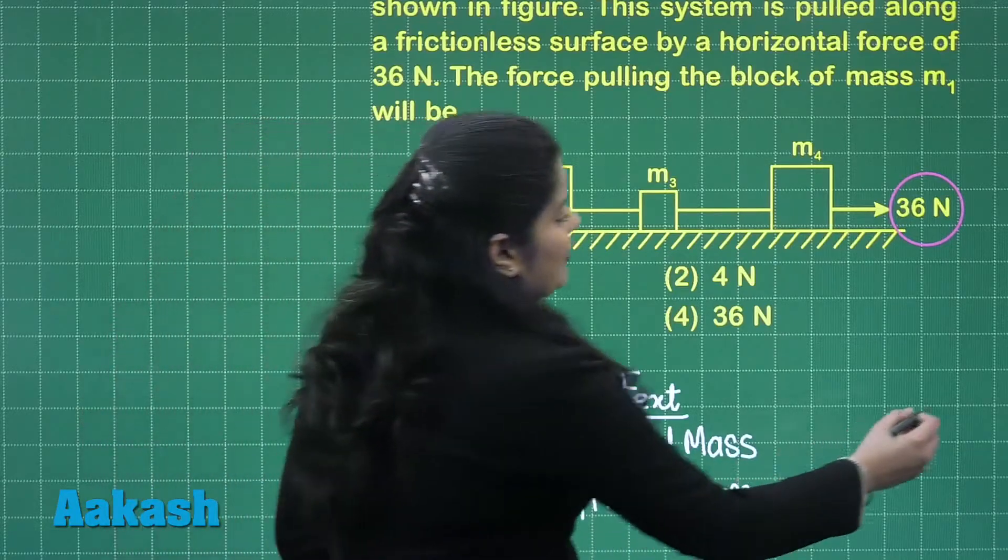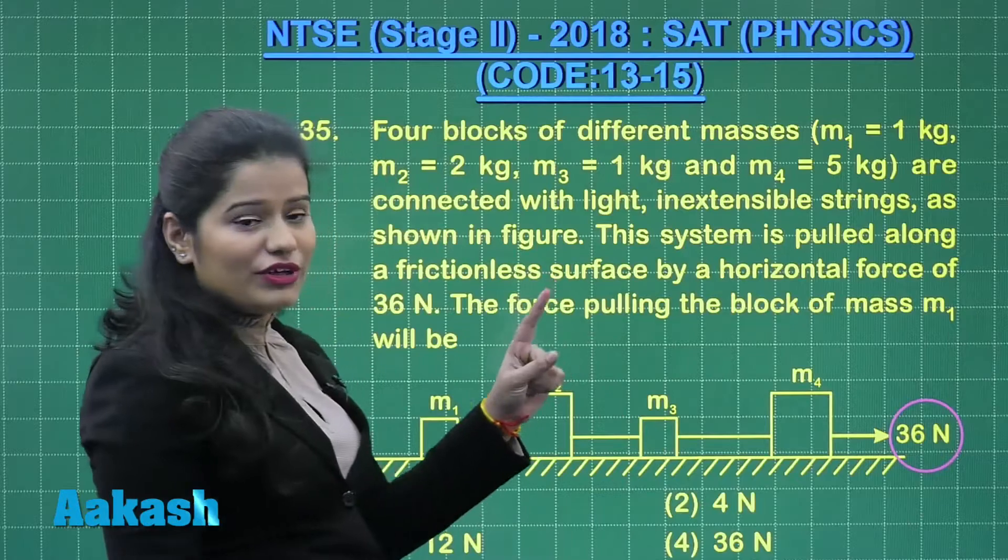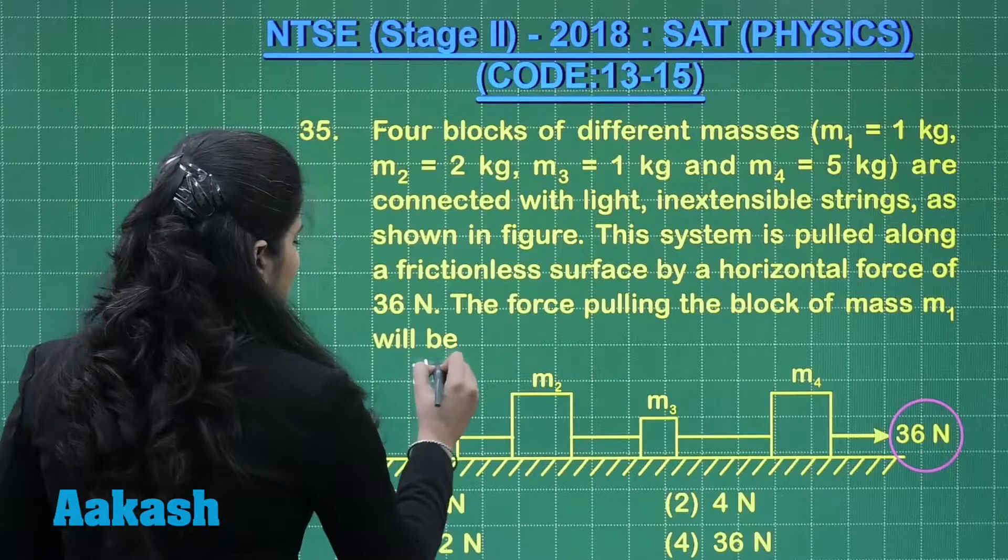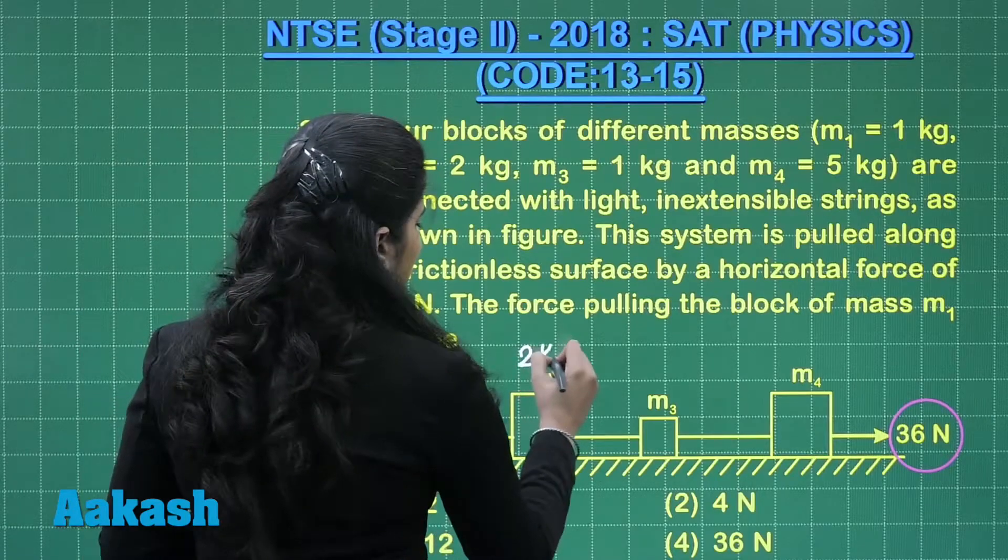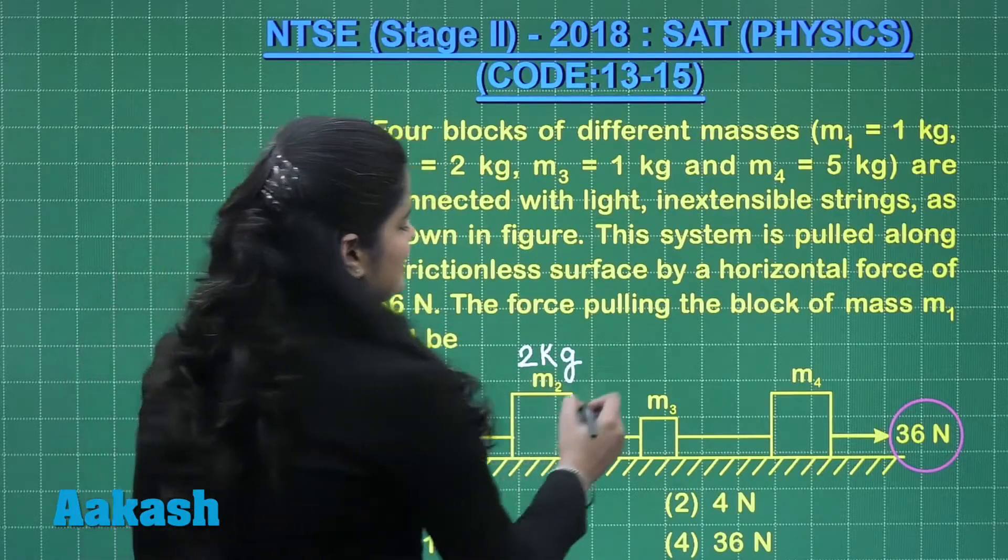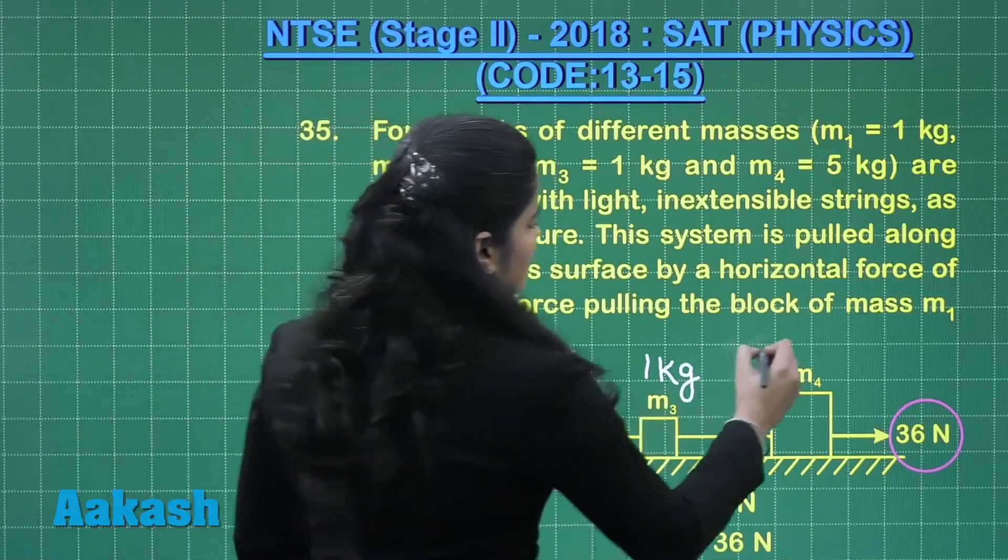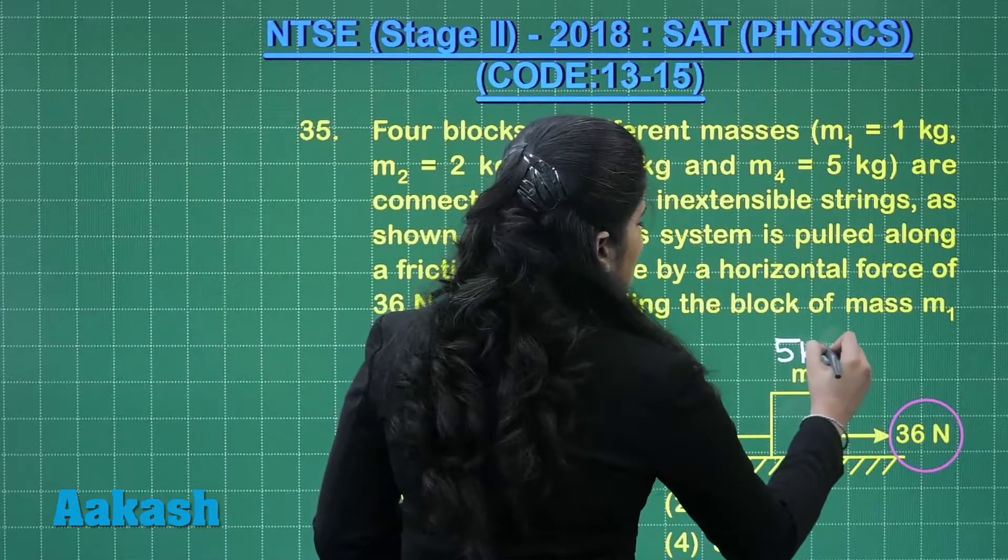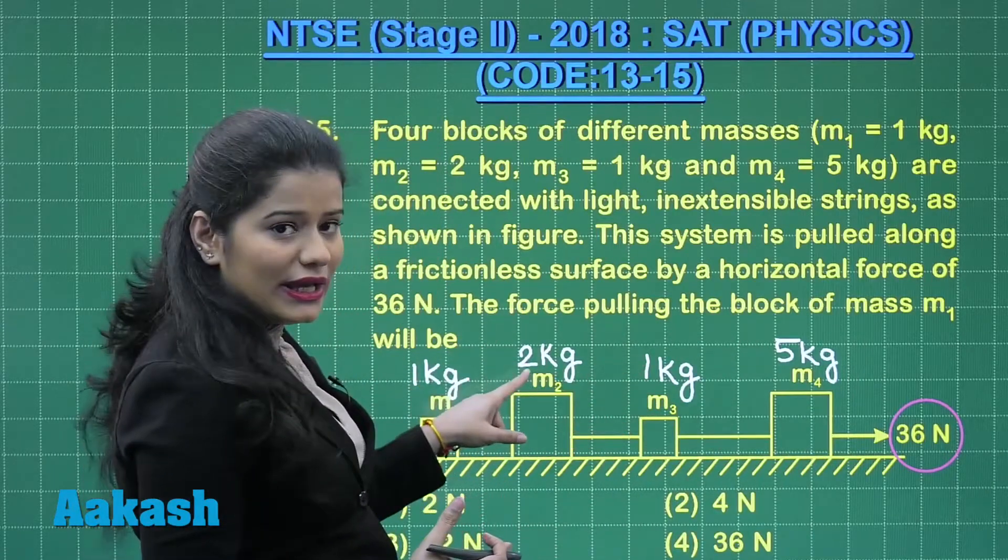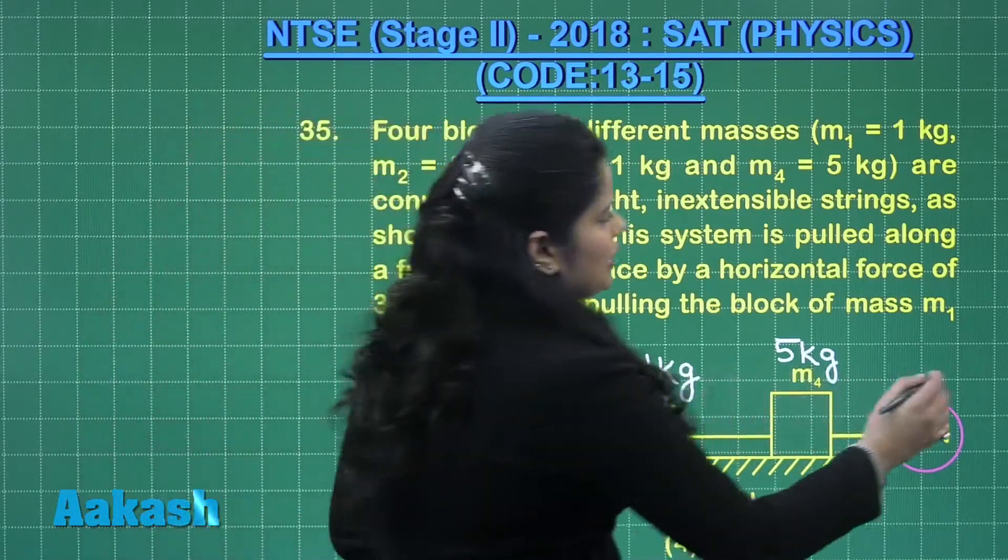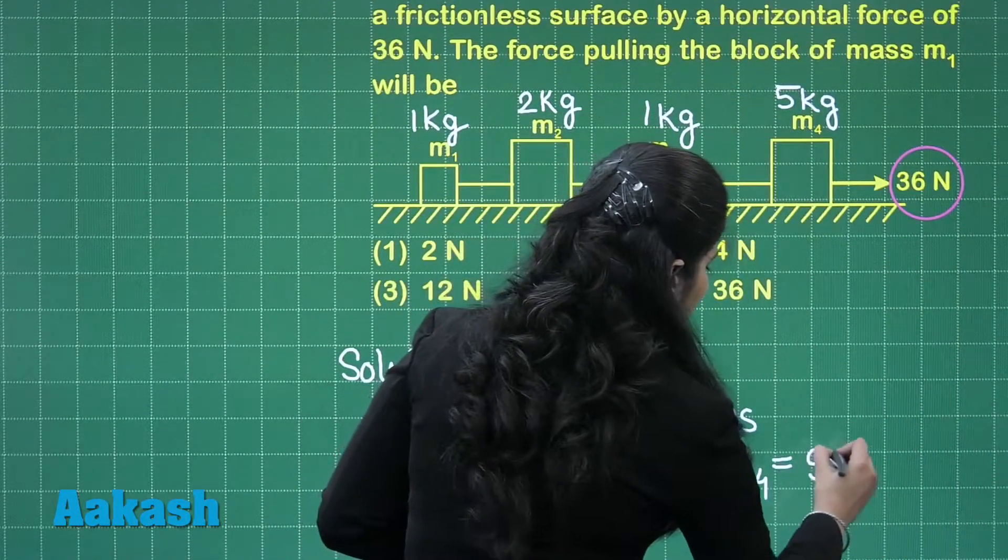So, what is the value of M1, M2, M3 and M4? See here M1 is 1 kg, M2 is 2 kg, M3 is of mass 1 kg and M4 is of mass 5 kg. So, the total mass will be 5 plus 1, 6 plus 2, 8 plus 1, 9. So, the total mass of the system is 9 kg.